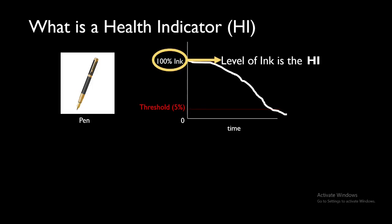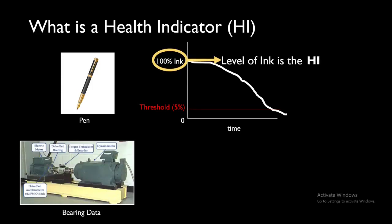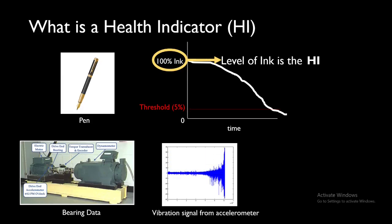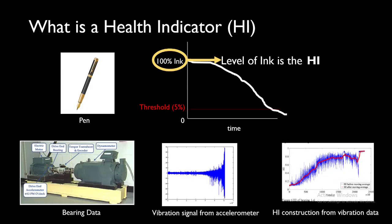The level of ink, but what will be your health indicator for a bearing data? Let's say in the bearing our output is vibration data or temperature data. How we can convert this into a health indicator?